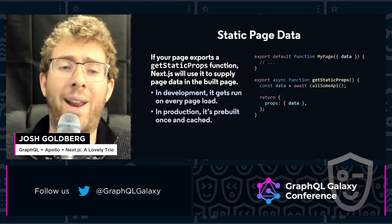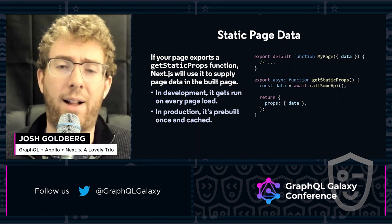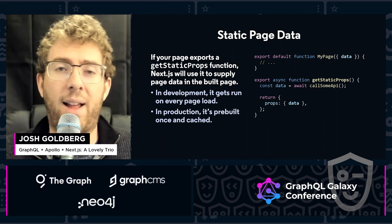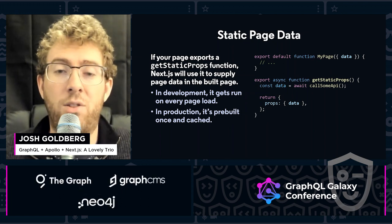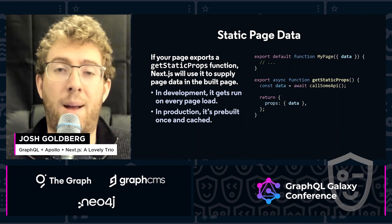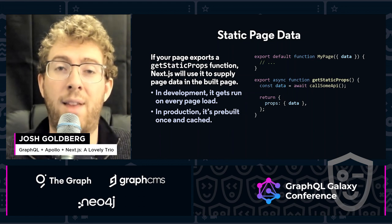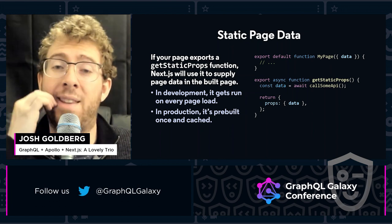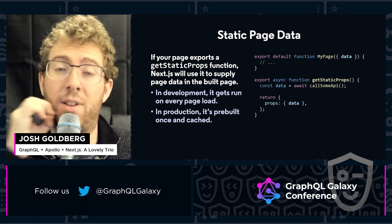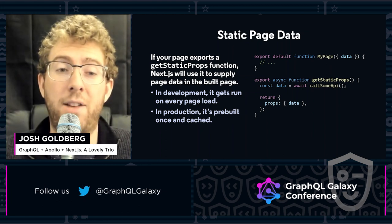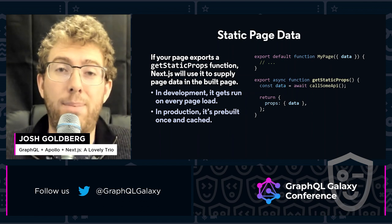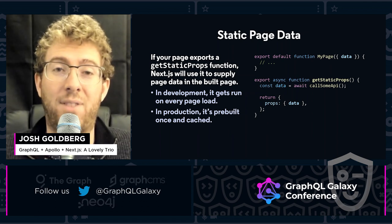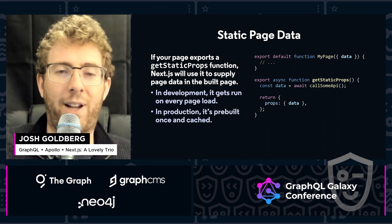Next lets you export a getStaticProps function from that file, which can be async, and in some way finds the data for that page, then returns the data as props to be passed to that page's default component. In development, this getStaticProps function will be called every time you try to load the page, but in production, the page is pre-built with HTML and then this data is cached, so you don't have to keep querying for it over and over again.